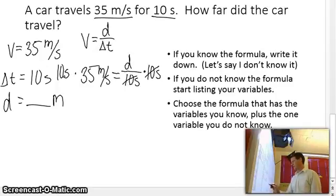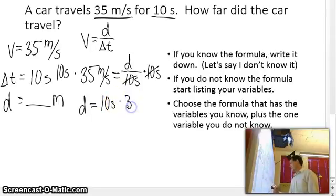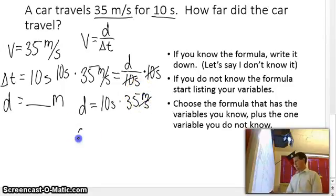And just because I'm getting a little crowded here, I'm going to rewrite it and I'm going to put the D first so everything's real pretty. So distance equals 10 seconds times 35 meters per second. And I can finish it up by multiplying 10 times 35, which is 350.